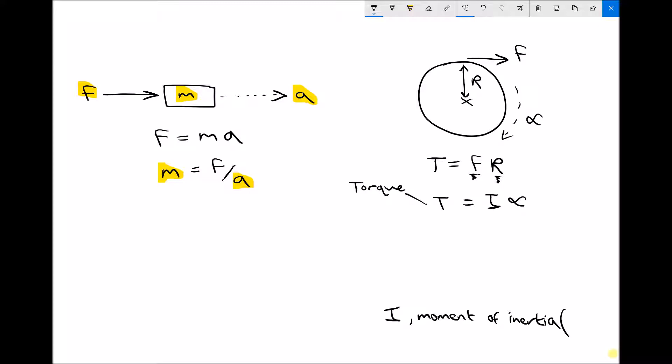Now the units of moment of inertia are kilogram meter squared. And we'll see where that comes from in just a minute. So let's rearrange our equation to make this new variable, the subject. So I, the thing we're trying to find, is torque, or the turning force, or the turning moment, divided by the angular acceleration.